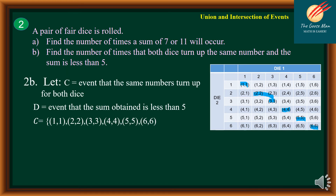Let D equal the event that the sum obtained is less than 5. So we have (1,1), (1,2), (1,3), (2,1), (2,2), and (3,1).